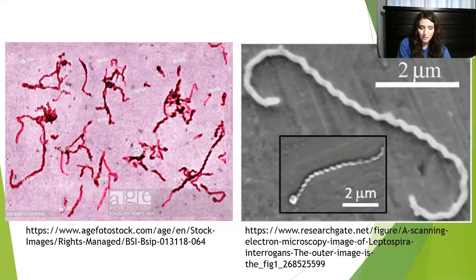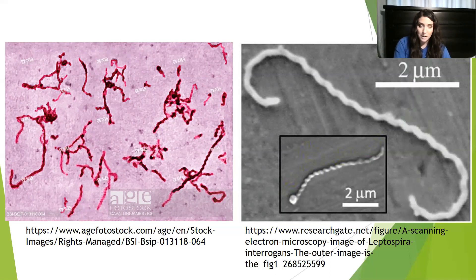Leptospirointerrogens can survive in the right environmental conditions for up to three months. However, it cannot reproduce unless inside of a host, because it requires the host's body temperature for maximum metabolic function. Once the bacteria enters the body of its host, it spreads through the bloodstream and lymphatic system, and reproduces asexually through binary fission.